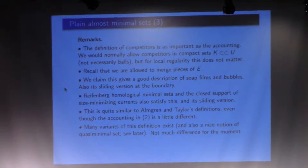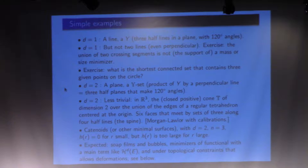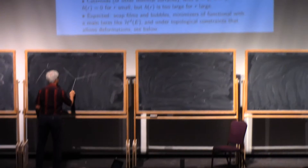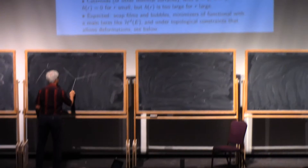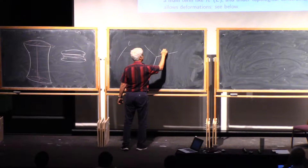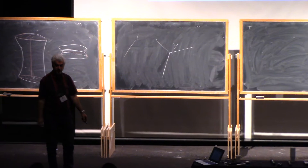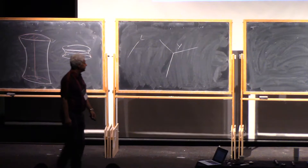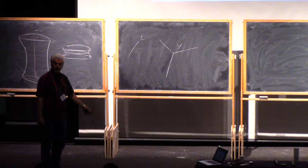I'll now give simple examples of almost minimal sets. When the dimension is 1, the minimal sets of dimension 1 are just lines. Imagine three equal angles — I'll call this a Y, and it is minimal. If you try to deform this and get something better, you cannot. The 120-degree angle comes from the fact that if you try to distort by moving the central point, you need a point where the derivative is zero, and this forces the 120-degree angle. These are exactly the only non-empty minimal sets in R^n of dimension 1 that can exist.